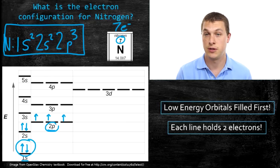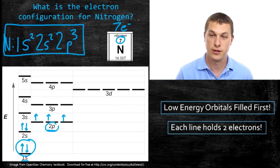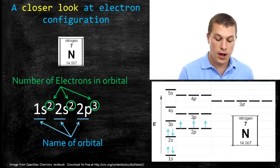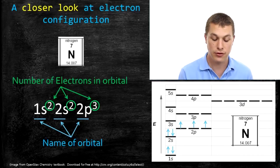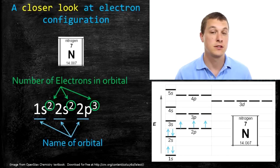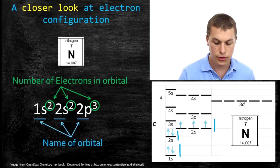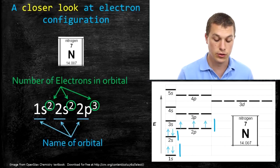It turns out there's a really easy, fast way to do this using the periodic table, which we'll cover in the next video called 'The Periodic Table Trick for Electron Configurations.' Now, the superscripted numbers after 1s, 2s, and 2p tell you the number of electrons in each orbital, whereas the orbital name — like 1s — tells you which orbital it is. 1s means the lowest energy, smallest s orbital; 2s means the second lowest energy s orbital. We have two electrons in the 1s, two electrons in the 2s, and three electrons in the 2p — hence 1s² 2s² 2p³.